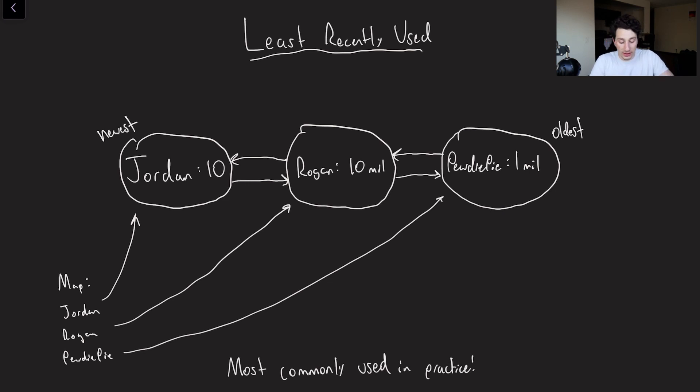And so again, Gaurav is going to come in and add a new piece of data. Right? Gaurav. And so now we can add it into our doubly linked list. I'll explain why we do that in a second. And then we would get rid of PewDiePie, because that is at the oldest end of things. So that's how we would do a new entry in the LRU cache.